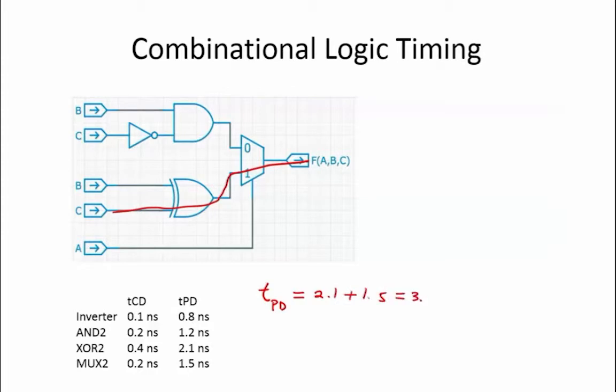The contamination delay of a circuit is defined as the shortest delay from when the inputs change to when the outputs begin to change, or when the outputs are no longer guaranteed to be holding their previous stable value. In order to calculate the contamination delay, we find the path whose sum of the contamination delays is the least.